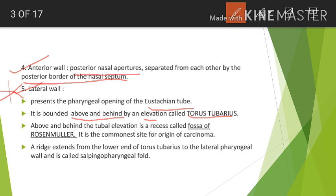Above and behind this tubal elevation there is a recess called the fossa of Rosenmuller. The fossa of Rosenmuller is the commonest site for the origin of carcinoma. There is also a ridge that extends from the lower end of the torus tubarius to the lateral pharyngeal wall, called the salpingo-pharyngeal fold.